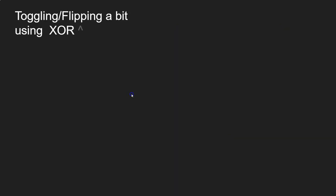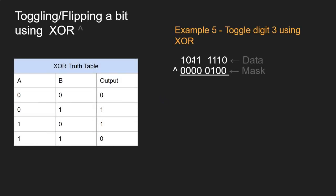What if we want to flip a bit? Say we have some data and we want to take whatever is at digit 3 and flip it — whatever it is, we're going to toggle it. We can do this using an exclusive OR (XOR) gate. XOR is similar to OR: if both inputs are off it's off, if one is on it's on, but if both are on it flips to off. Running through bitwise XOR with our mask, only the third digit is affected — if it was a 1 it goes to 0, if it was a 0 it goes to 1.